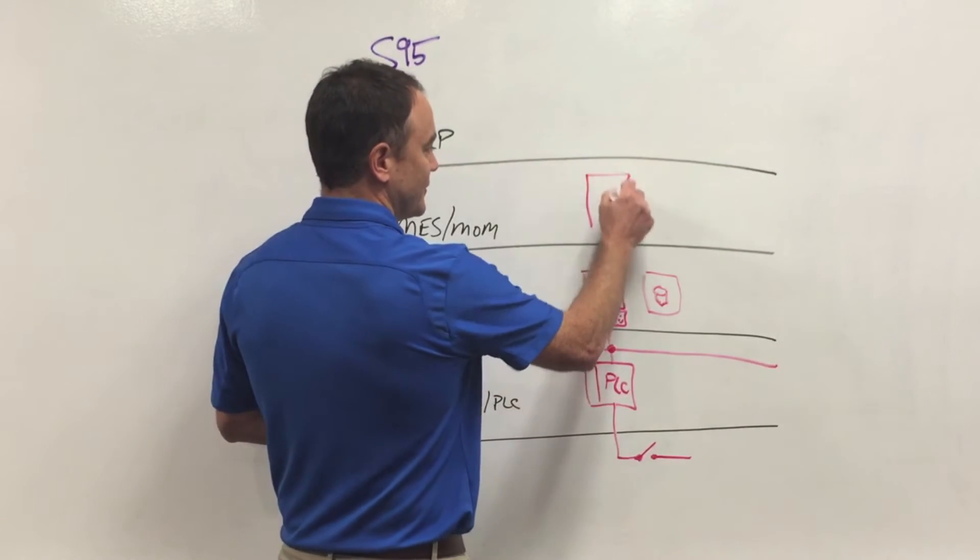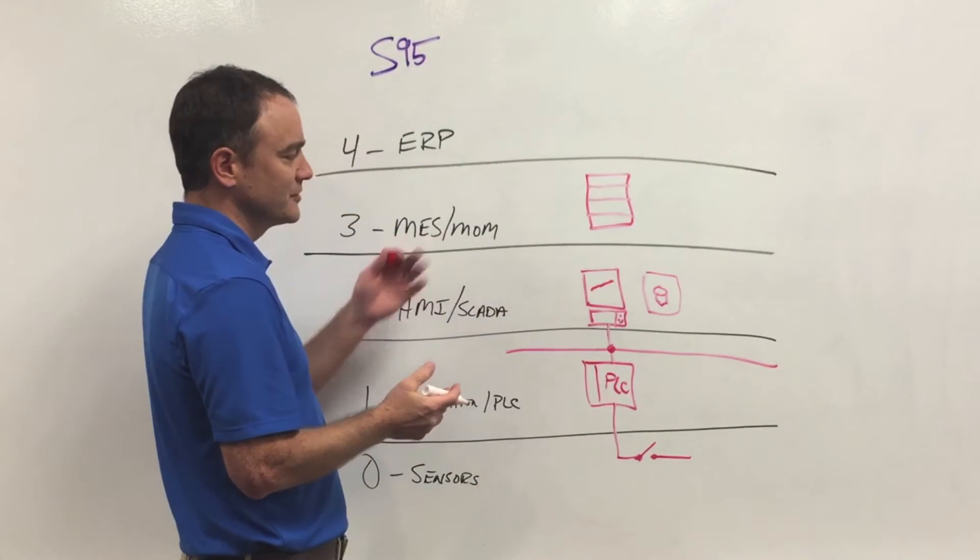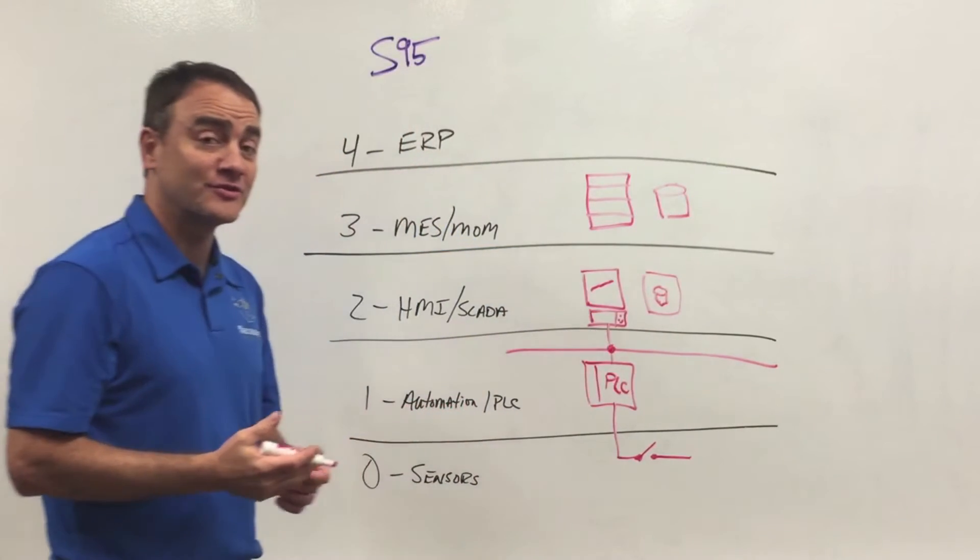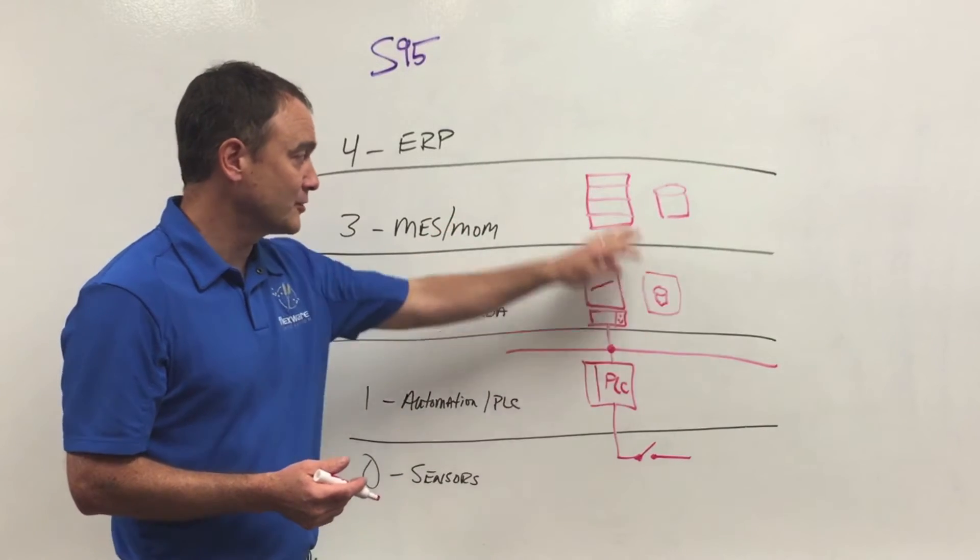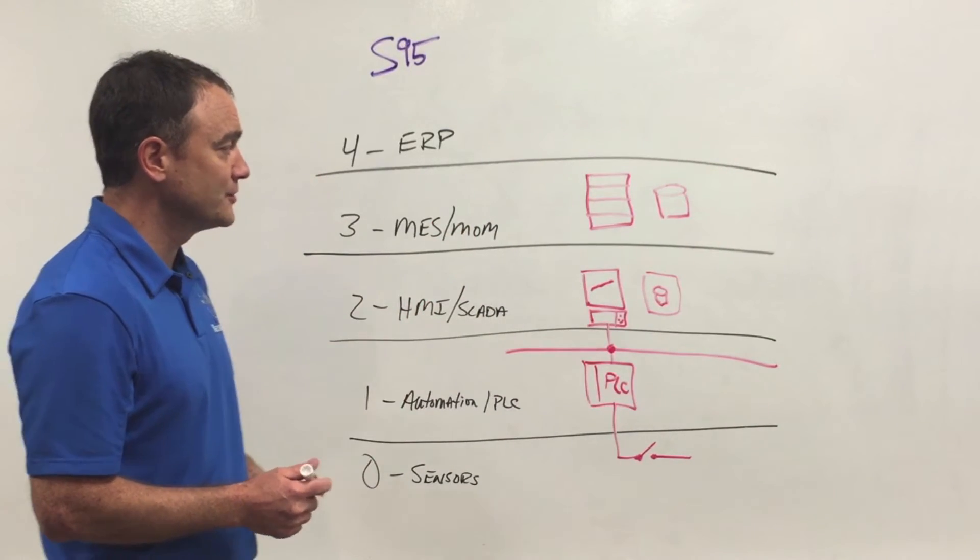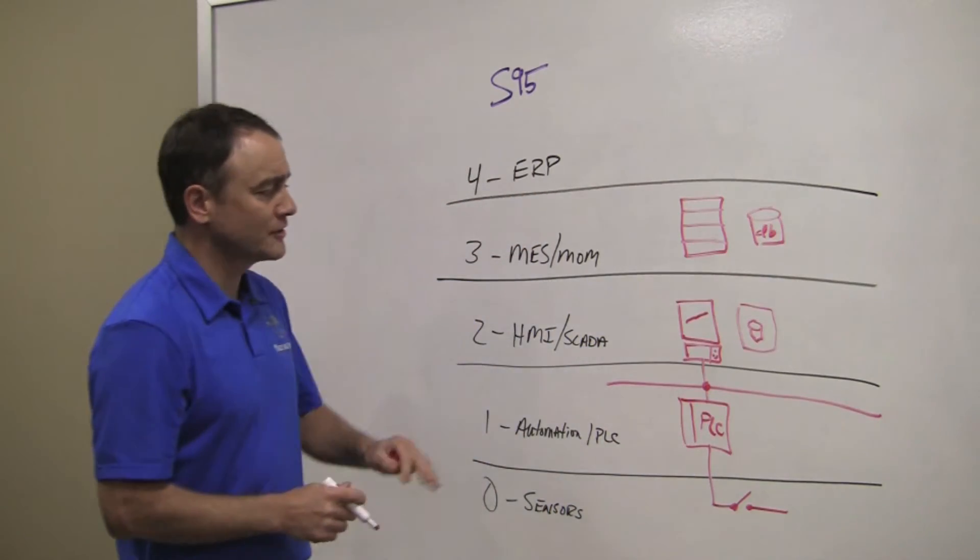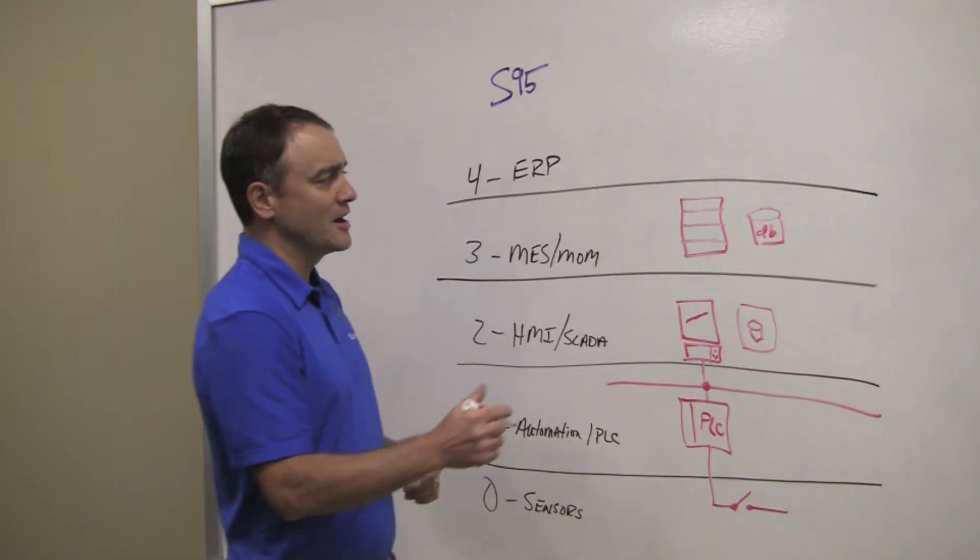On top of that, we have now this more of a database architecture, higher level system called manufacturing execution systems, which is really why FlexWare started 20 years ago, was to be an integrator in this MES space, including all of these other levels. And so, we have these databases with lots of data in them, collecting information about what's happening in the factory, in the environment.